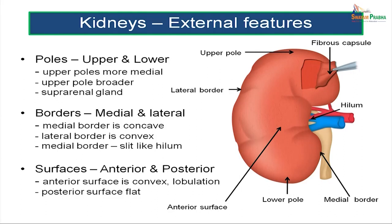Coming to the external features, each kidney has an upper pole and a lower pole. The upper pole is more medial compared to the lower pole, which is located a little laterally. The upper pole is slightly broader and is closely related to the suprarenal gland. Each kidney has two borders: a medial border, which is concave towards the midline, and a lateral border, which is convex towards the outer side. The medial border shows a slit-like opening called the hilum.